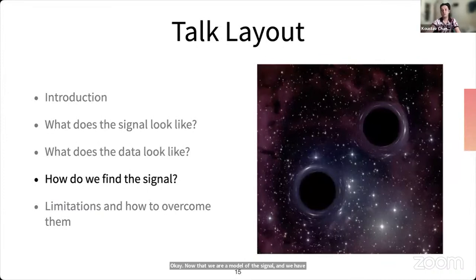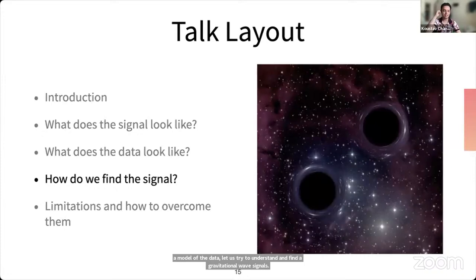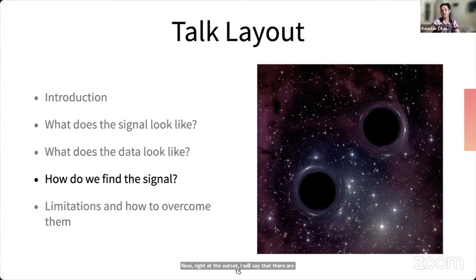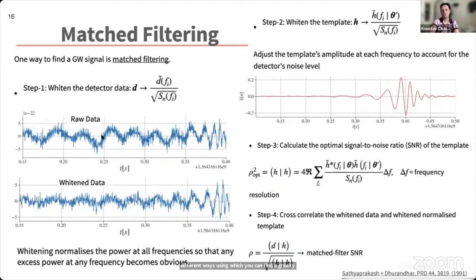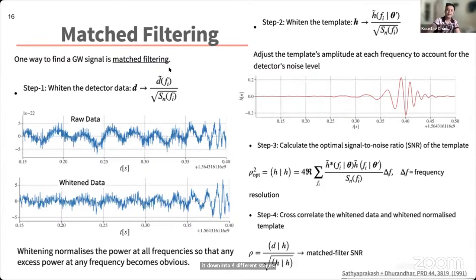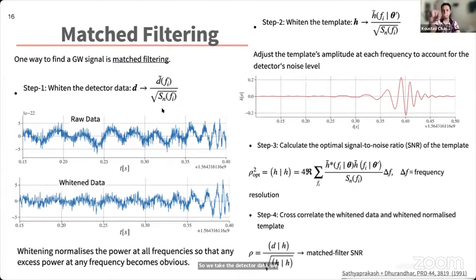Now that we have models for the signal and the data, let's find a gravitational wave signal. There are different ways to search for gravitational wave signals; the focus here is on a technique called matched filtering, broken down into four stages. The first step is whitening the detector data: we take the detector data, Fourier-transform it, and normalize it with the amplitude spectral density.